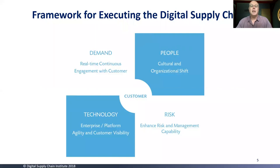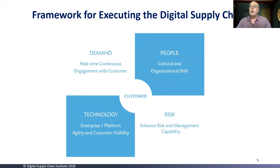At the Institute, the framework we use looks at four buckets: demand, people, technology, and risk. Those are the four issues we think about in all the work that we do. Through this series we've had sessions on demand, people, and technology. Today we zoom in on risk. But in all the work, the customer really needs to be at the center of your thinking.